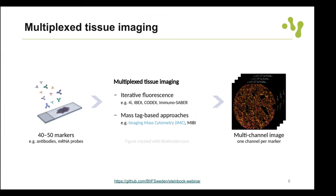Multiplex tissue imaging primarily focuses on antibody-based tissue imaging methods, which typically work by staining tissue with antibodies or mRNA probes. There's now a plethora of multiplex tissue imaging methods, coarsely categorized into iterative fluorescence-based methods such as FISSEQ or CODEX, and mass-tag based approaches that work with metal isotopes as reporters.